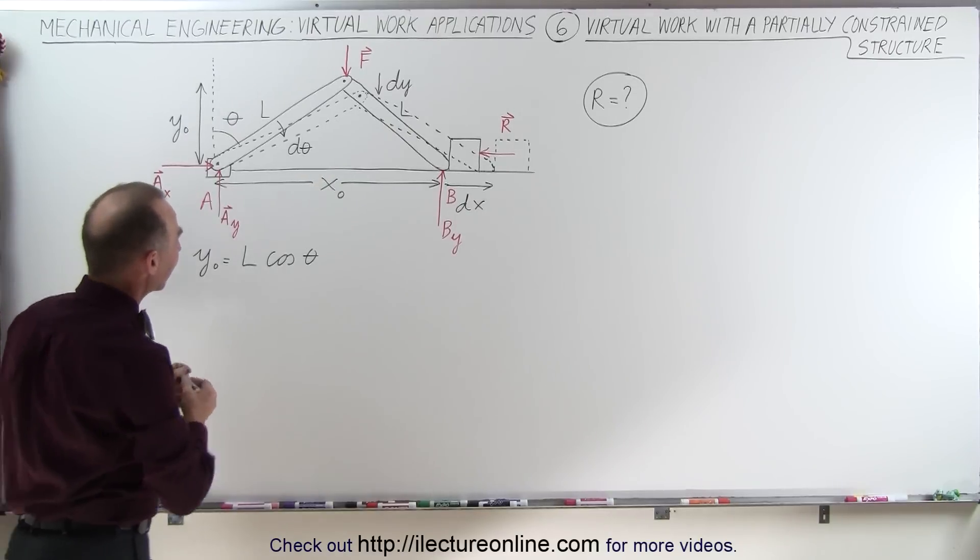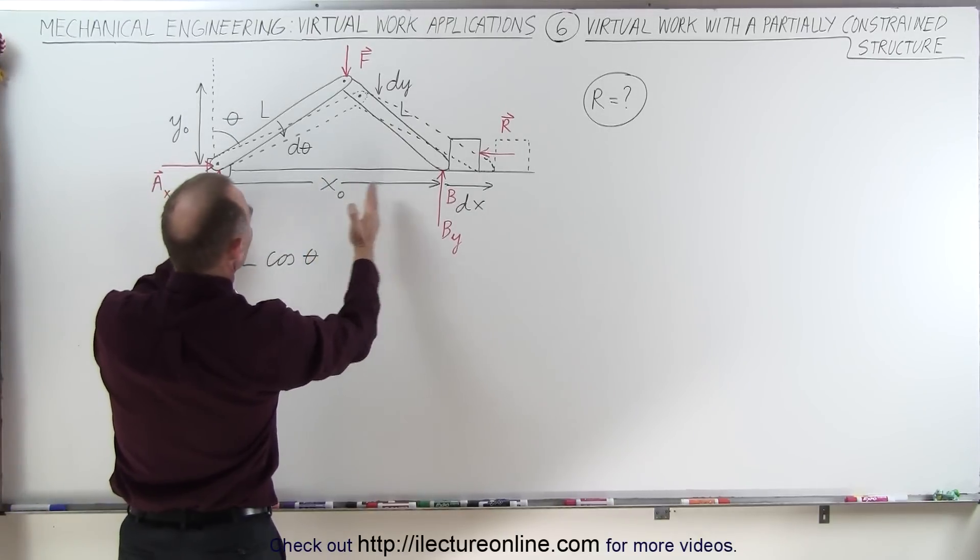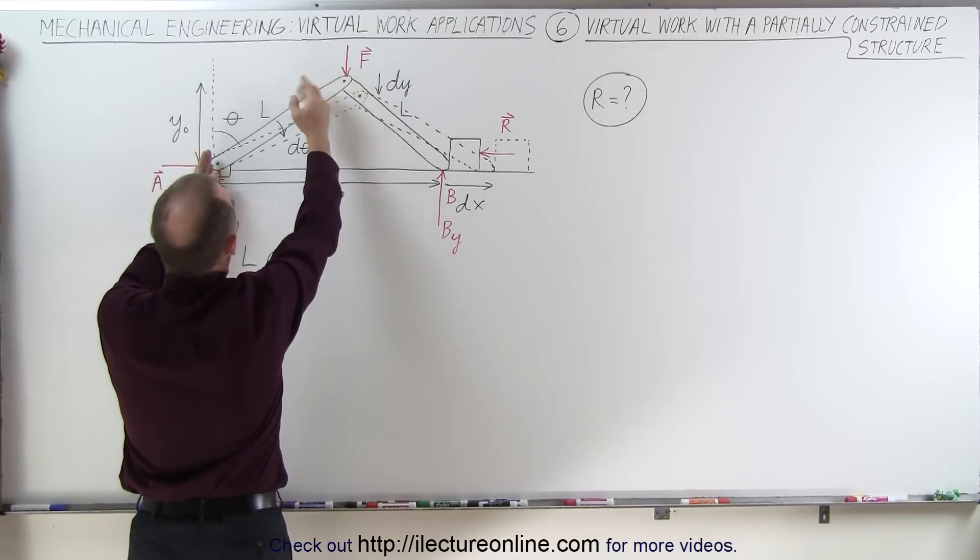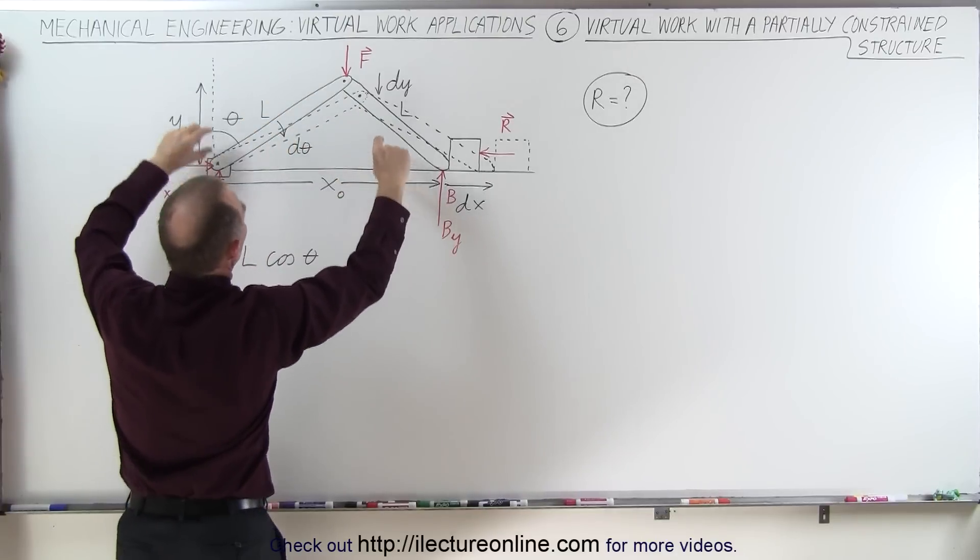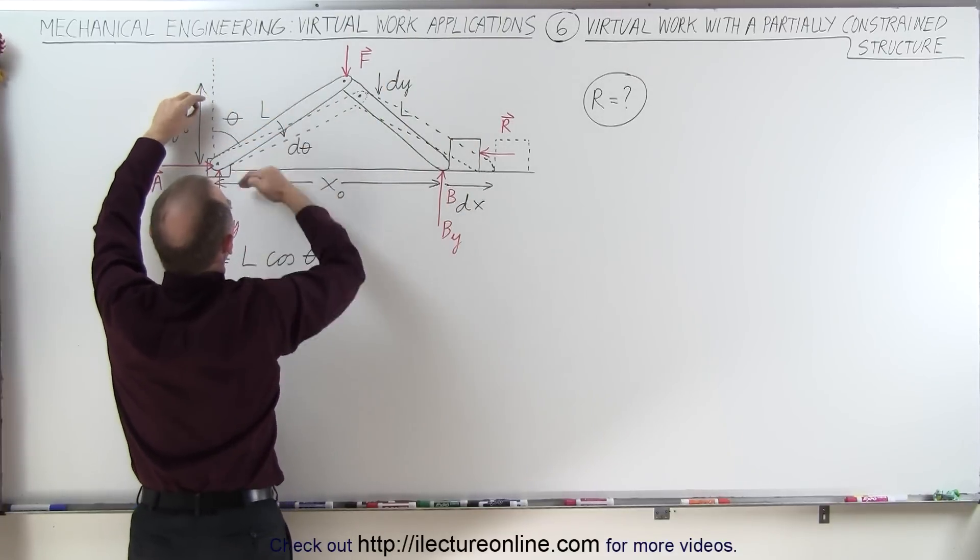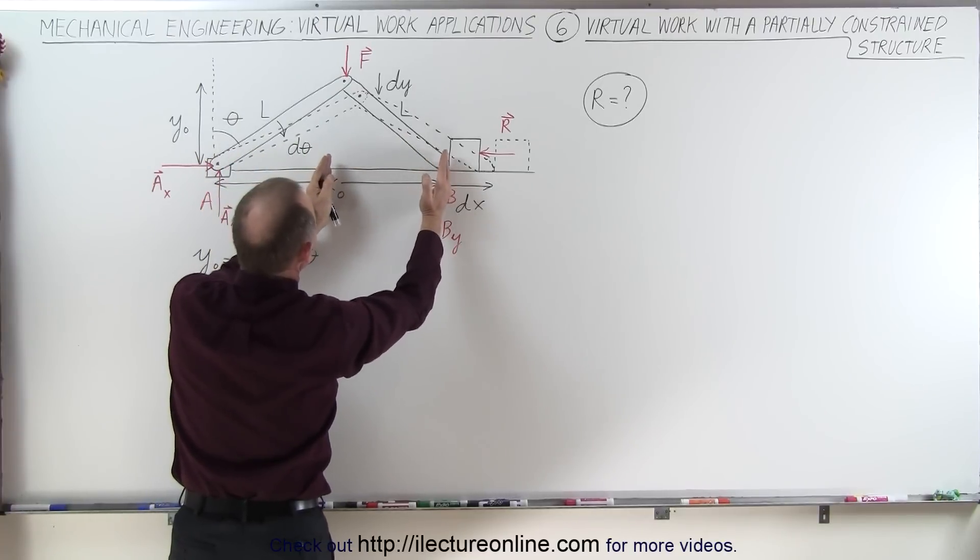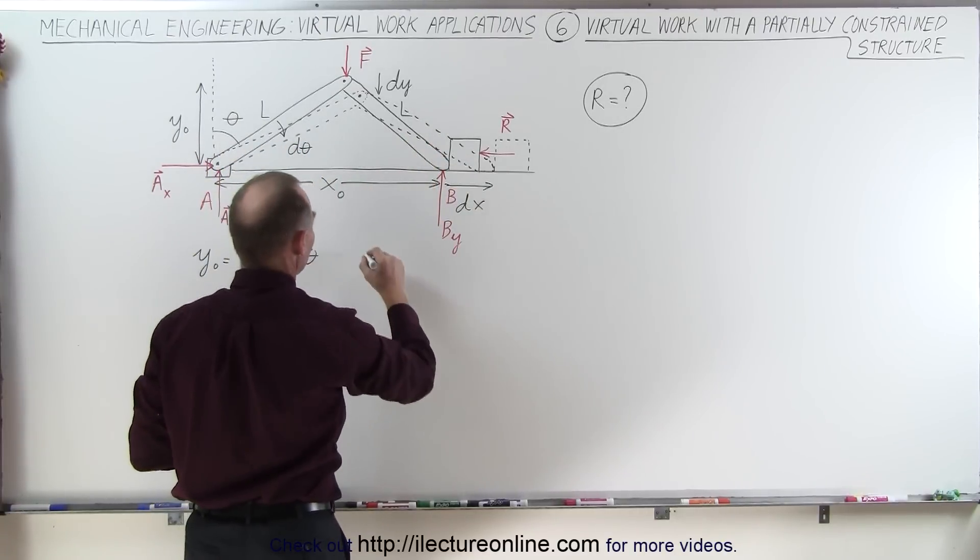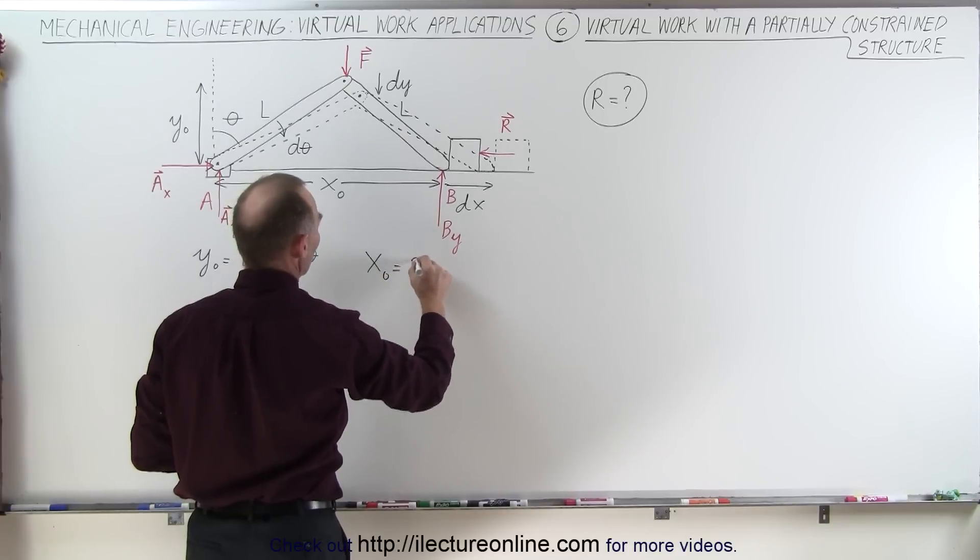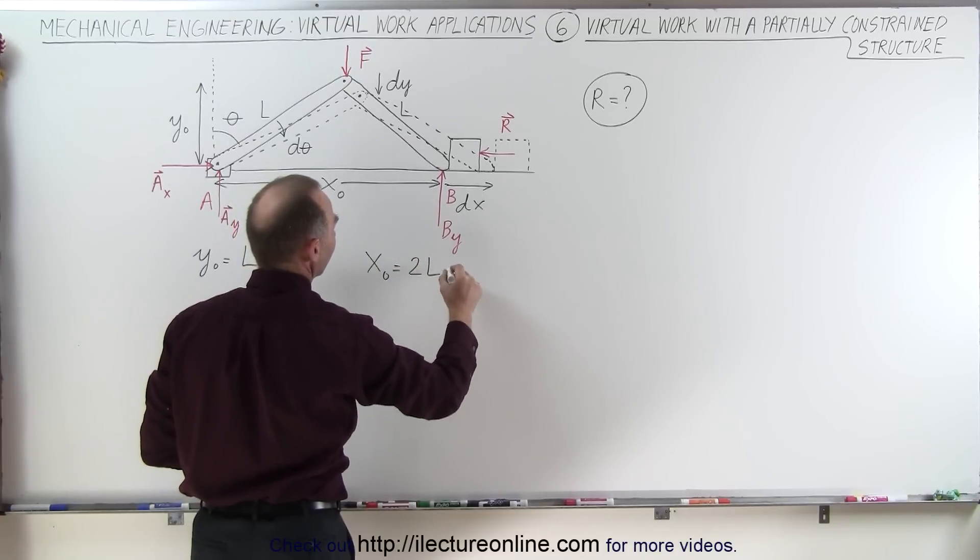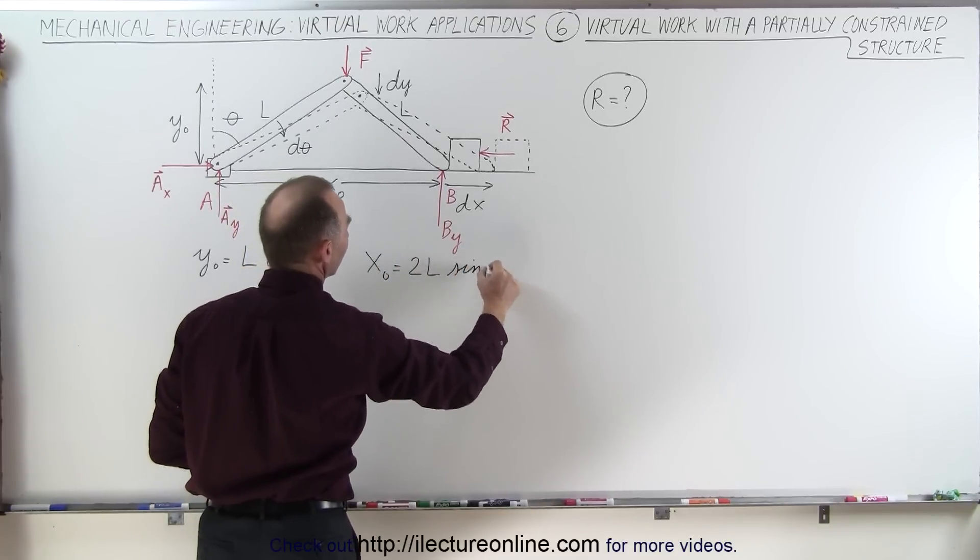We can also define X here. That would be L times the, if you put the X over here, that would be opposite the angle, so this would be L times the sine of theta, but we have to multiply times two because there's two members there. So that means that X sub 0 is equal to twice the length of each member times the sine of the angle theta.